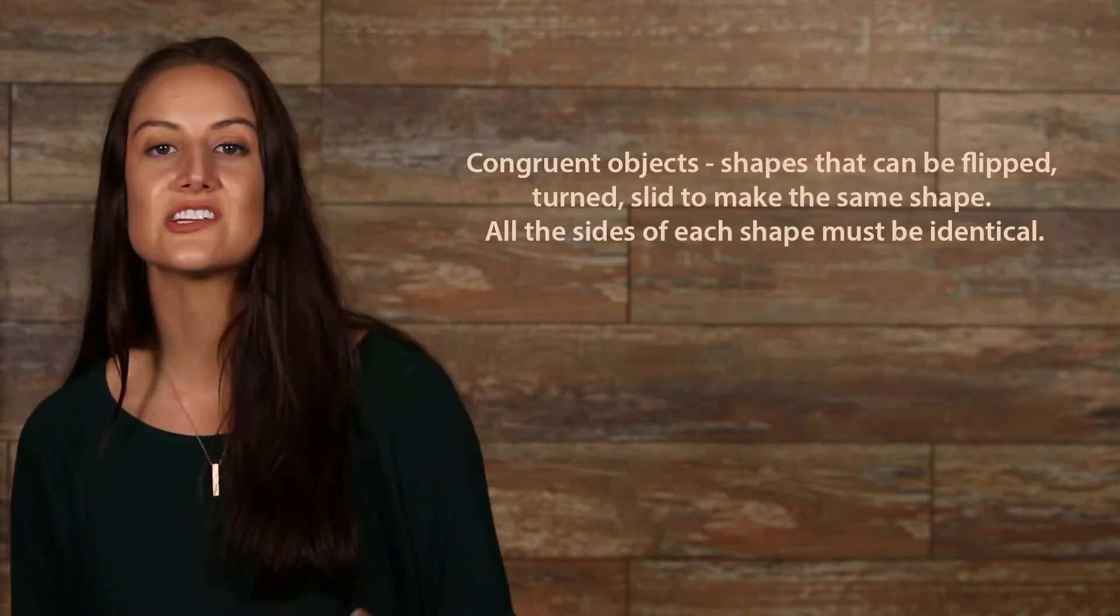All the sides of each shape must be identical. There are a few different ways you can move congruent objects. Moving the object using one of these three movements may change the position or the way that the shape looks, but the shape itself will always remain the same.